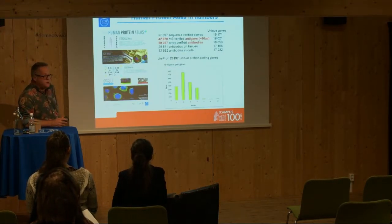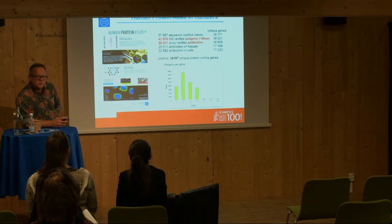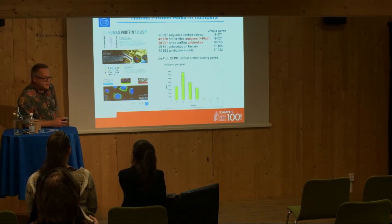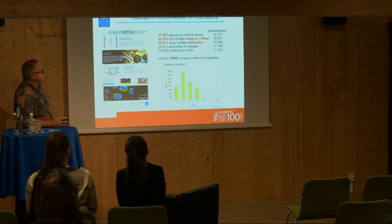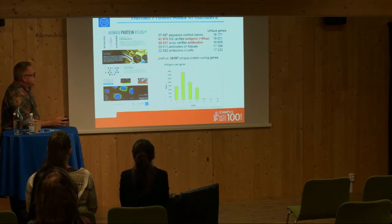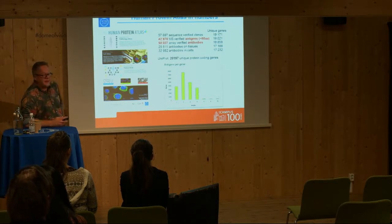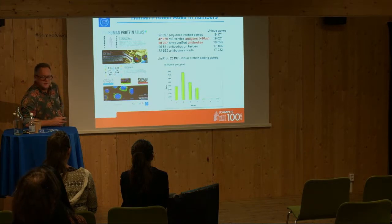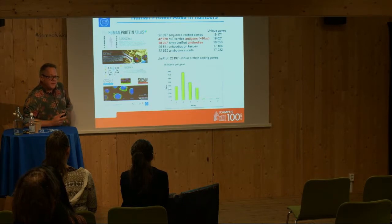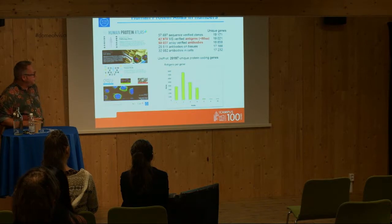What we are using, however, is not tissues or cells — we are using body fluids: plasma, serum, and CSF (cerebrospinal fluid). What is really the key thing for us is that we have 40,000 mass spectrometry verified antigen protein fragments and roughly 50,000 protein array verified antibodies. These numbers are completely unique, and that's what we are able to utilize.